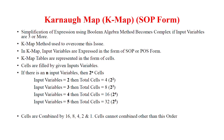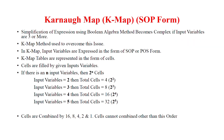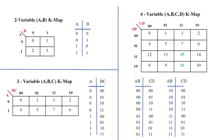K-Map can be expressed in both SOP and POS forms. The K-Map table is represented in the form of cells. The total number of cells is 2 to the power of n, where n is the number of input variables. For 2 inputs it is 4 cells, for 3 inputs it is 8 cells, and for 4 inputs it is 16 cells. We can represent 2-variable, 3-variable, and 4-variable K-Maps.